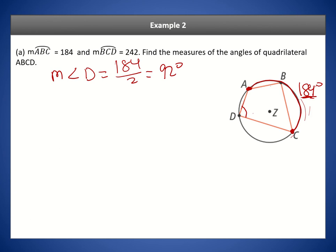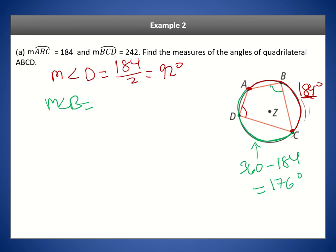Now let's find angle B. The intercepted arc for angle B is the arc between A and C on the other side. The red arc ABC is 184 degrees, and the red and green arcs add up to 360. So the green arc equals 360 minus 184, which is 176 degrees. Cutting that in half gives us angle B, which is 88 degrees.